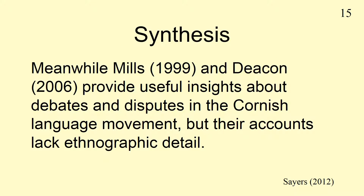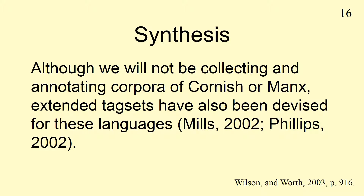A synthesis involves combining the ideas from two or more sources. In this example, the author's names form part of the text and the dates of publication only are placed between brackets. Meanwhile, Mills (1999) and Deacon (2006) provide useful insights about debates and disputes in the Cornish language movement, but their accounts lack ethnographic detail. In this example, the author's names do not appear as part of the text and so the author's names and the year of publication, with a comma separating the two, appear together in brackets at the end of this synthesis.